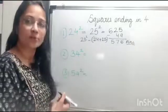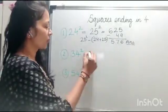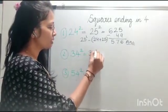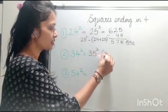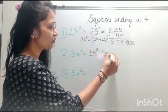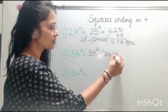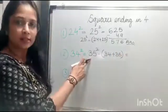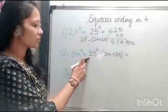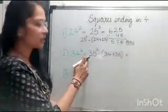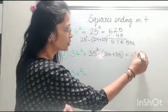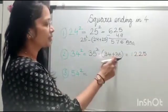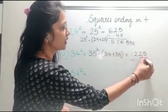Let's do one more sum. 34 squared. So the formula becomes: 35 squared minus (34 plus 35). How do I find 35 squared? 3 into 4 is 12, and 25 — so 35 squared is 1225. Then we subtract 69.